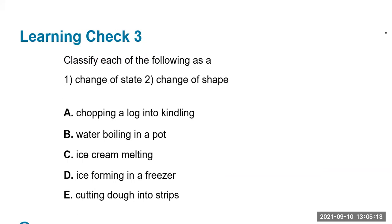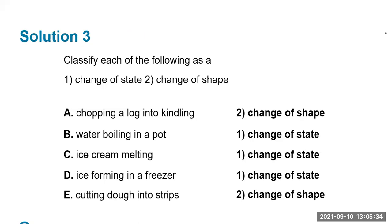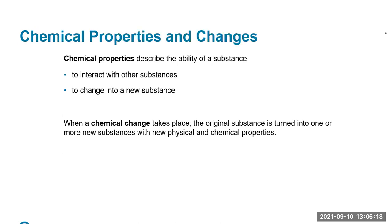Classify each of the following as a change of state or a change in shape: chopping a log into kindling, water boiling, ice cream melting, ice forming in the freezer, and cutting dough into strips. Chopping something up is changing the shape. Boiling water creates steam — that's changing the state from liquid to gas. Ice cream melting is a change of state — going from solid to liquid. Ice forming in the freezer is a change of state from liquid to solid. Cutting dough into strips is just changing the shape. All of these are physical types of changes.